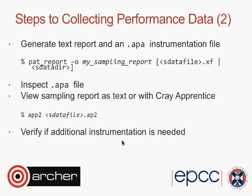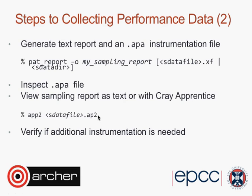To analyze the results, there are two steps. First, you have to generate a report from the .xf binary file — running 'pat_report' gives you a text file (e.g., 'my_sample_report') and a .apa file with information about the automated profile analysis. You can look at the report as text, but Cray also provides a GUI called Apprentice, which you can use to visualize the data. The pat_report also produces a .ap2 file for visual information. It depends on your taste whether you want to look at the tables of the report or at graphs.